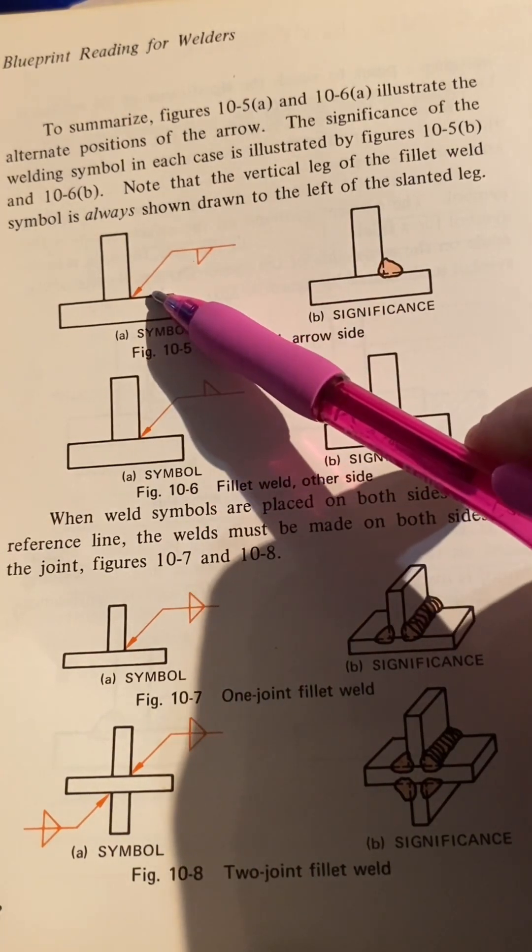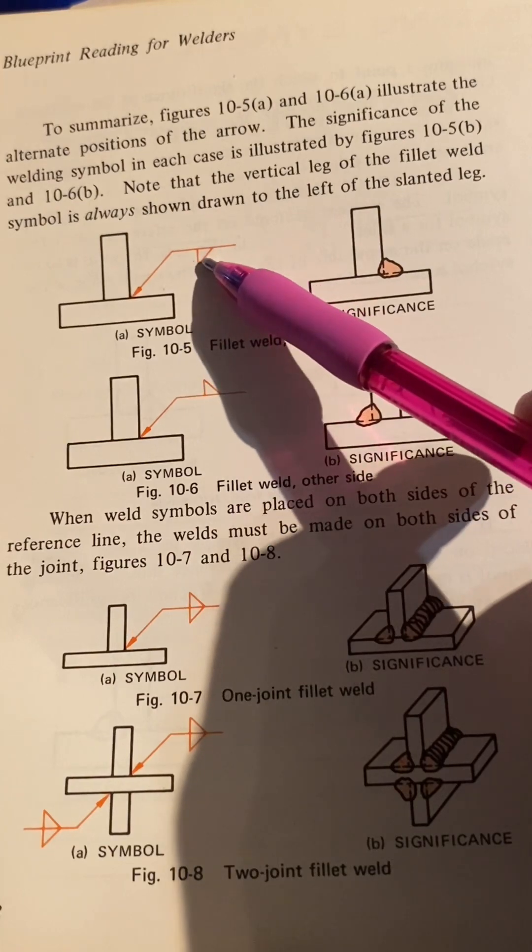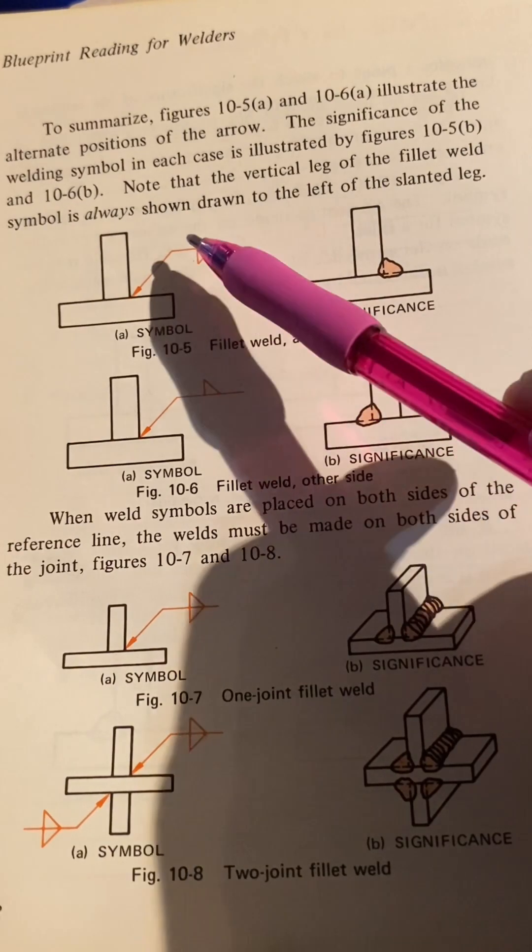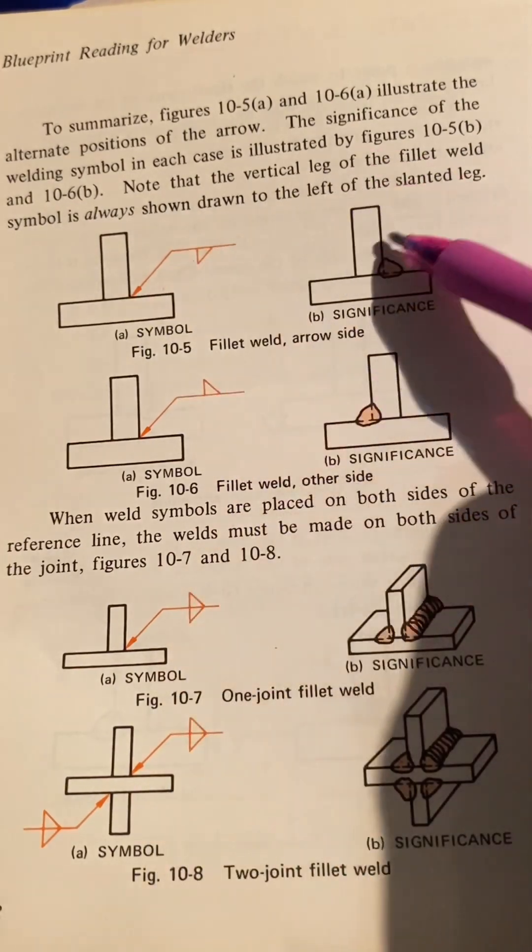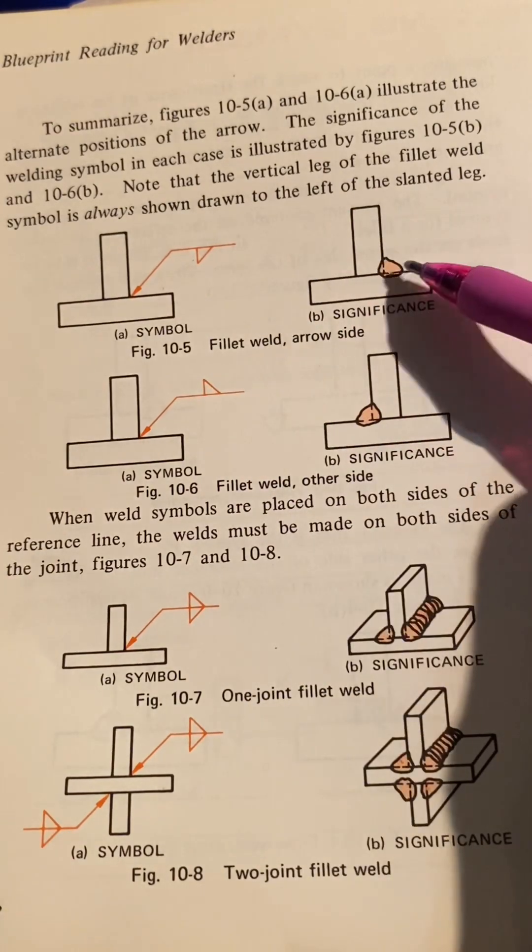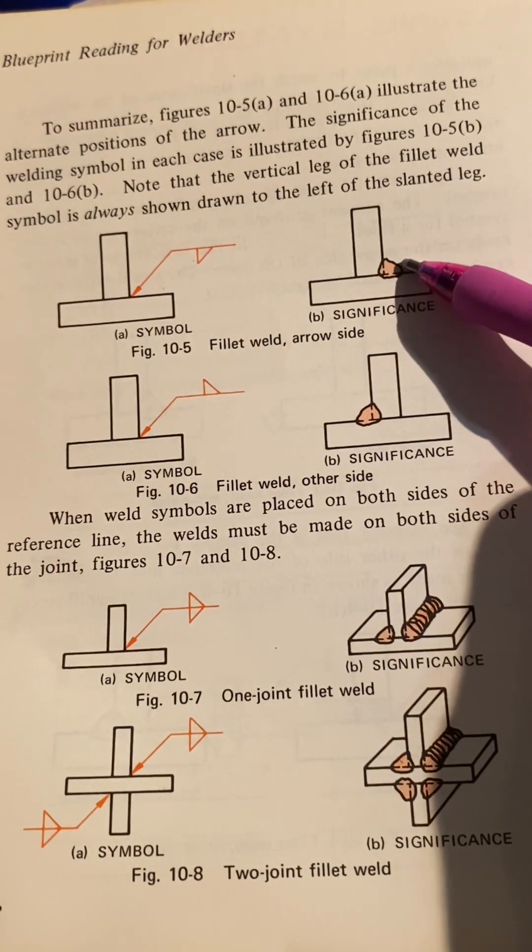And on this example, since the weld symbol is on the arrow side and the arrow's pointing this way, you see that it'd be the same piece, right? So it's welded on this side because it's on the arrow's side.